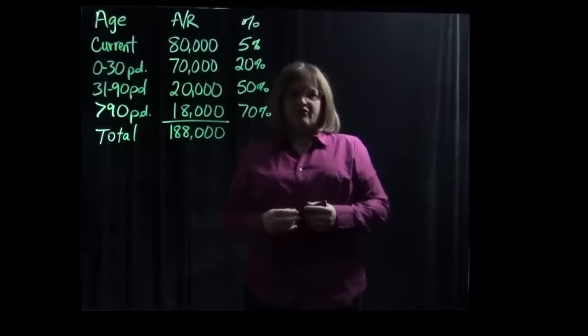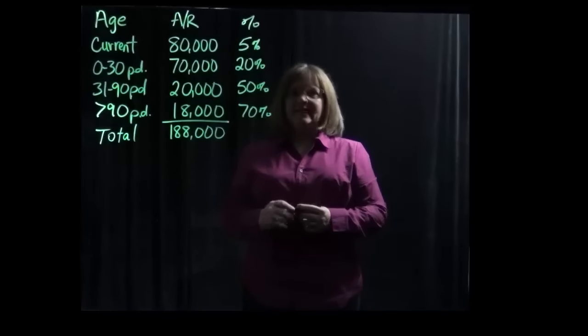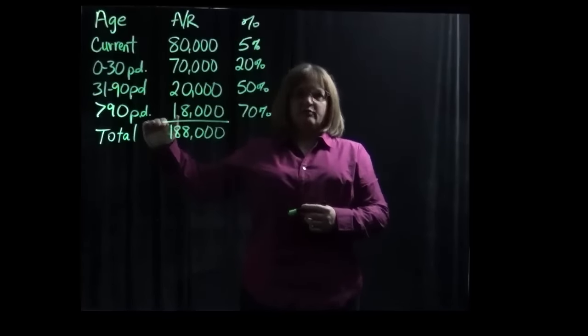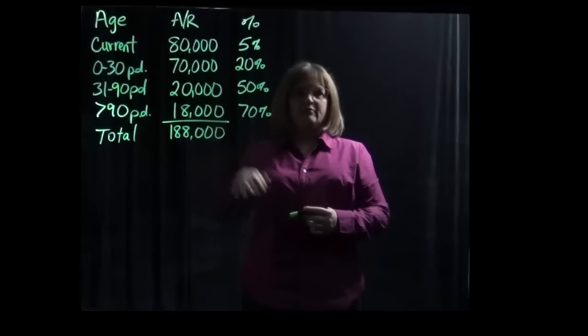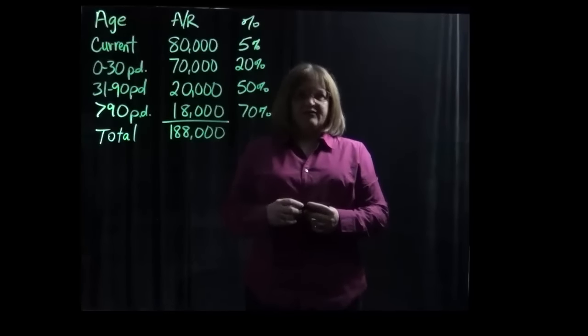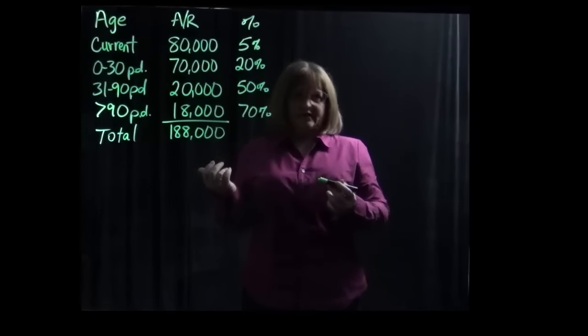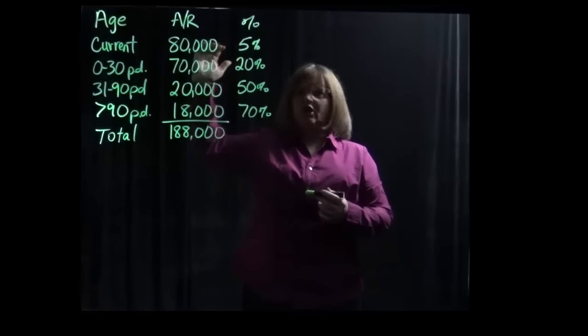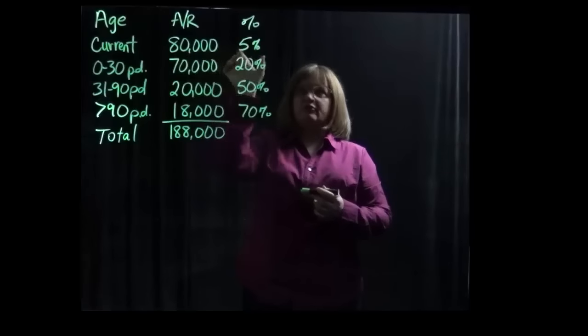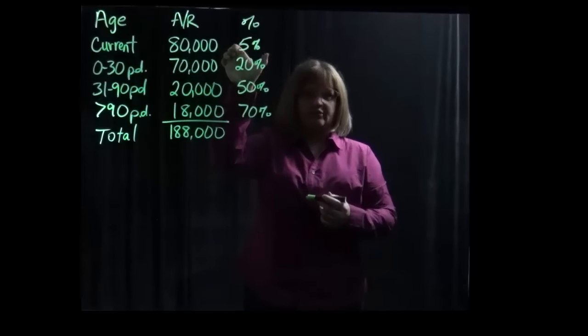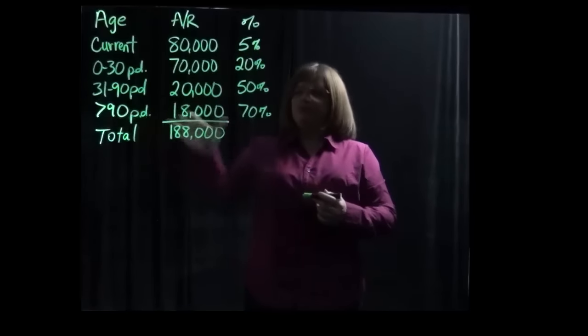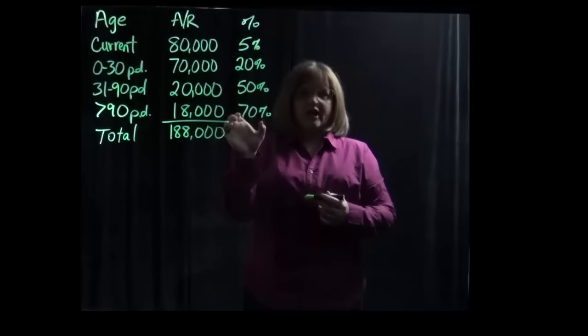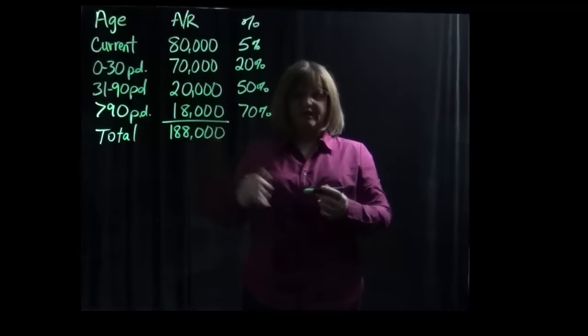In the aging of accounts receivable method, the idea is that the older our accounts receivable are, the less likely we'll be able to collect them. Because if they're that old, there's evidently a problem. And so we expect to collect a much higher percentage of the current accounts. In other words, the percentage uncollectible is much lower, whereas the ones that are older, we have a much higher uncollectible percentage, a lower collectible percentage.